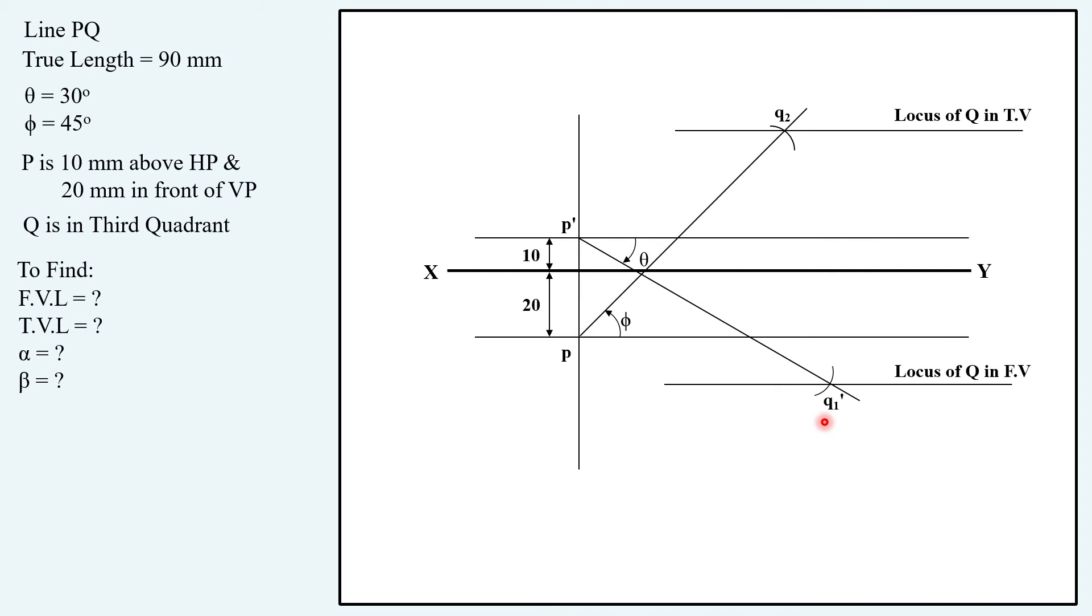Now we have to project this Q1' to opposite view that is the top view. Taking Q1 to Q1' in your compass as a radius, keeping with center P drawing an arc until it intersects with the locus of Q in top view.